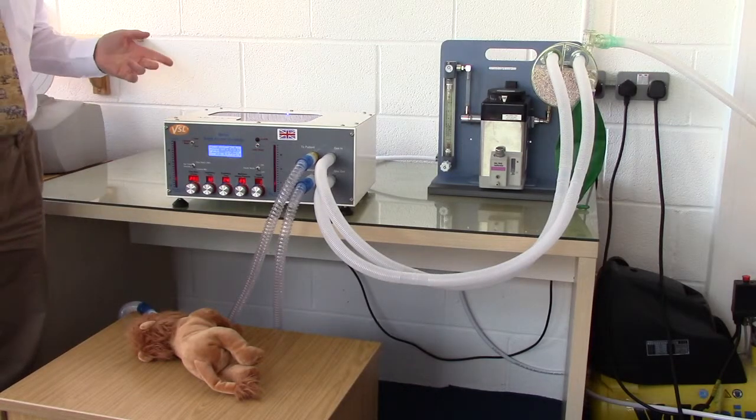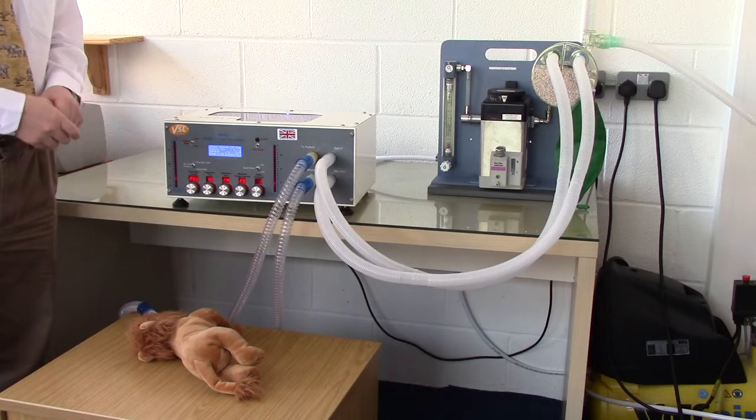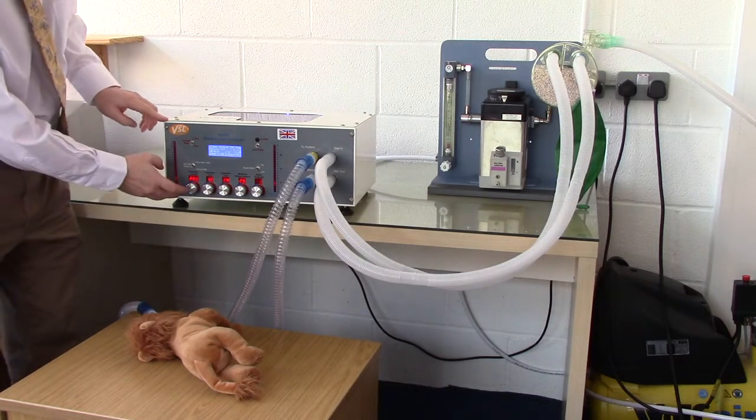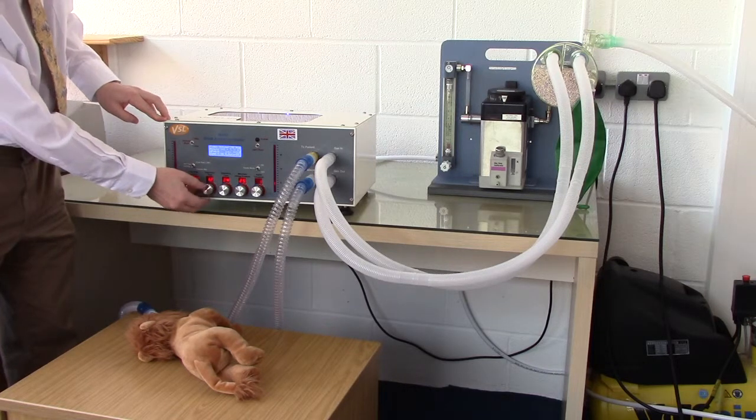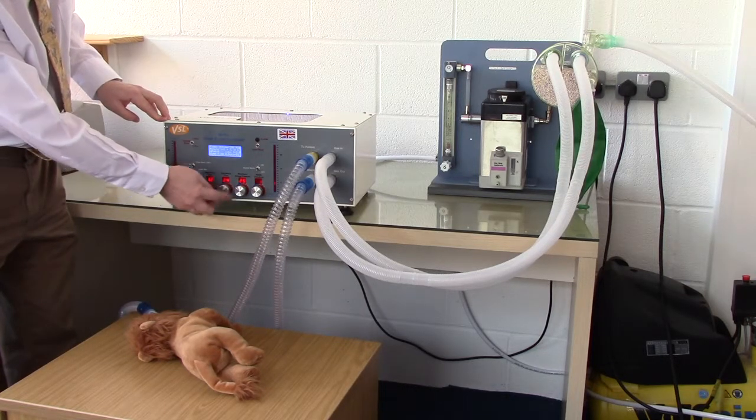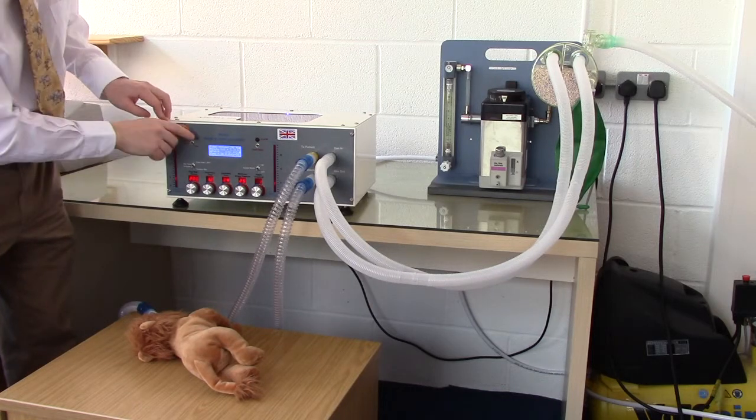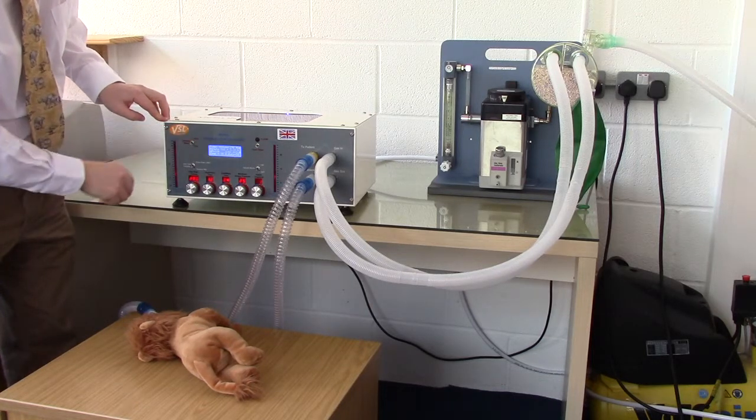I will now demonstrate ventilating an animal with a 200ml lung capacity. Set the tidal volume to 200, the inspiratory time to 1.2, expiratory time to 2.4, and the maximum working pressure limit to 25. Set the system to run.